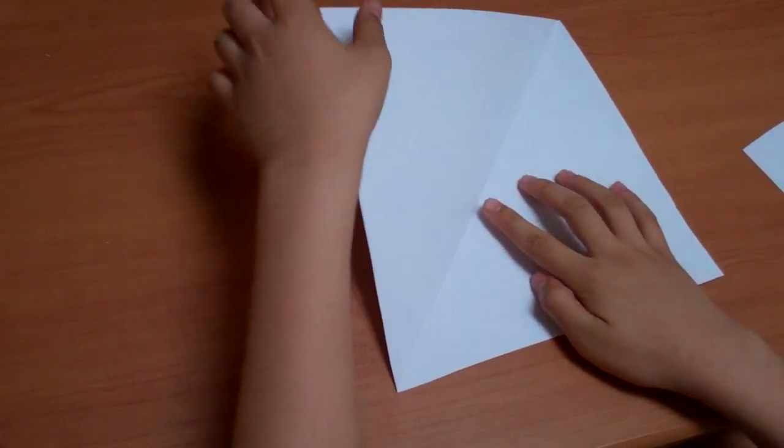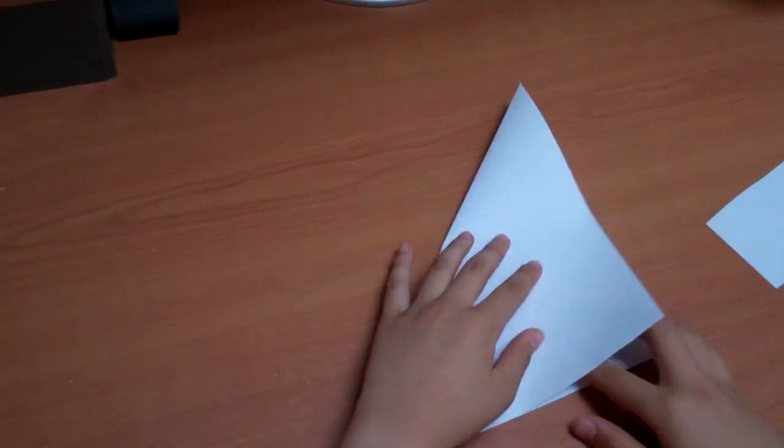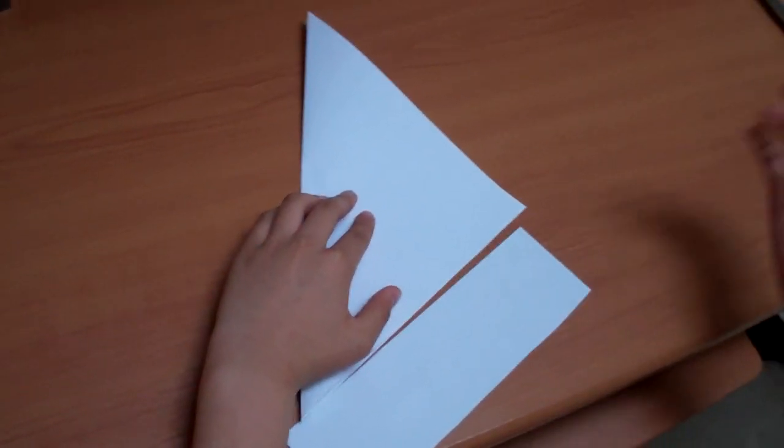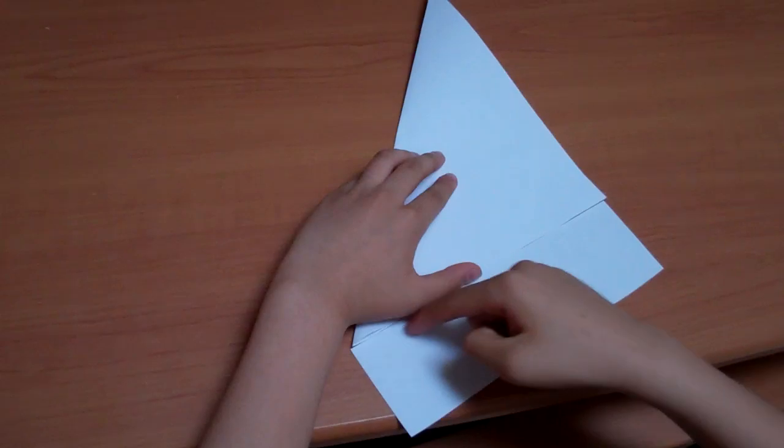First off, you need to fold this edge to this edge and then you have to cut off the excess paper. Already done so, but all you have to do is cut off this excess paper.